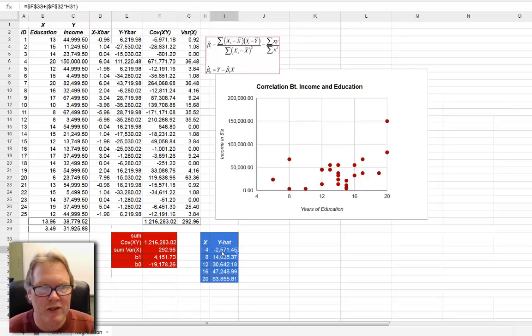And let's just go ahead and look in this first cell. You can see that the formula that I've typed in here is going to take my intercept and add that to the product of beta hat sub 1 times 4, the value in cell H31.